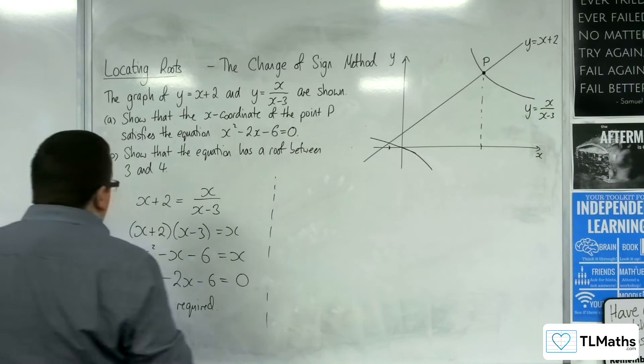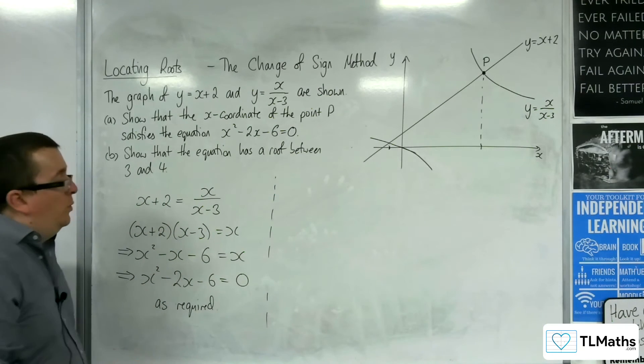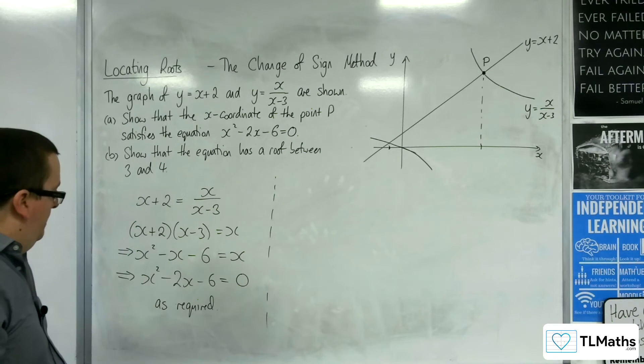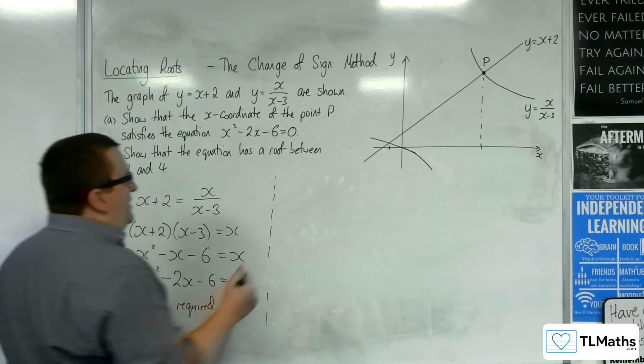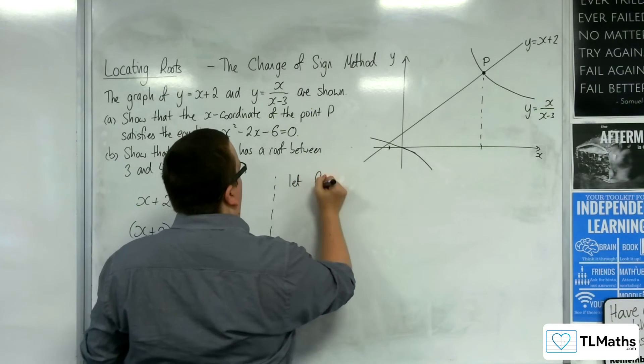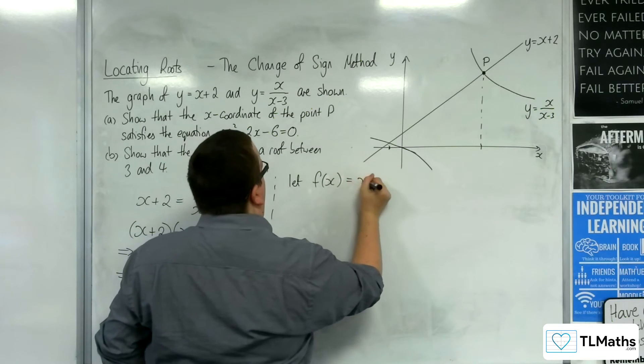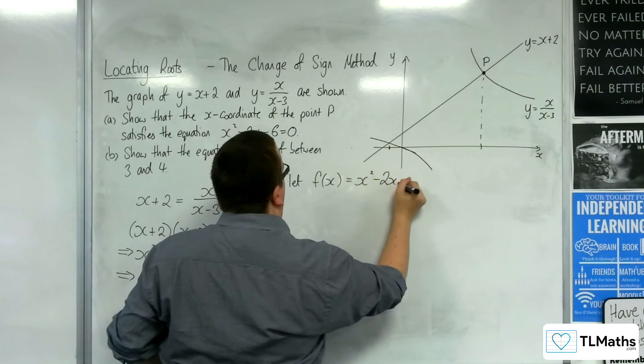Part B: Show that the equation has a root between 3 and 4. This is using the change of sign method. So we're going to let f(x) be x² - 2x - 6.